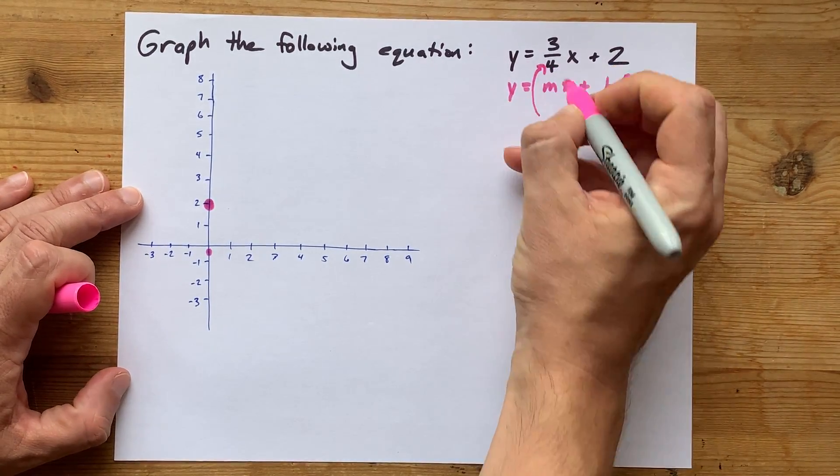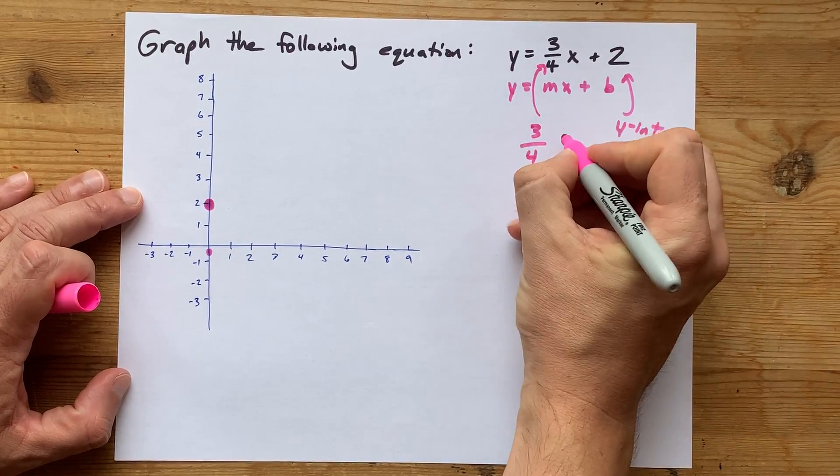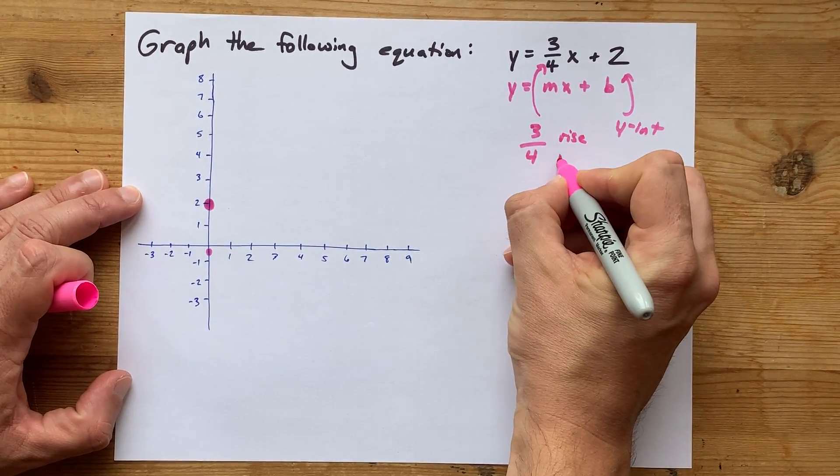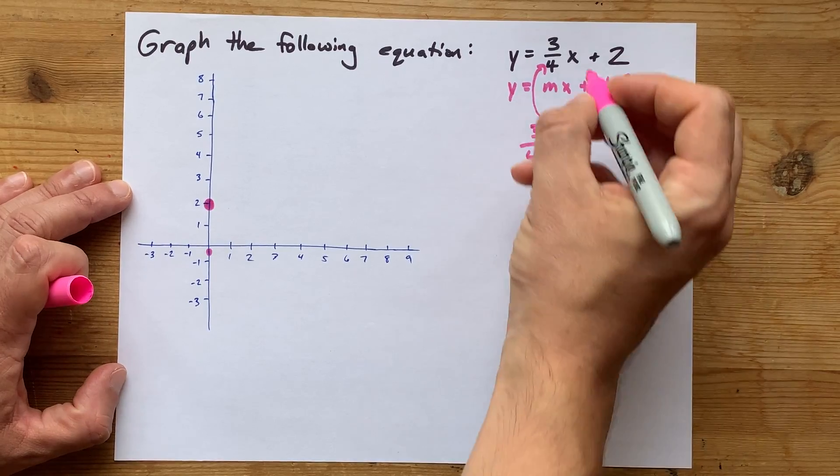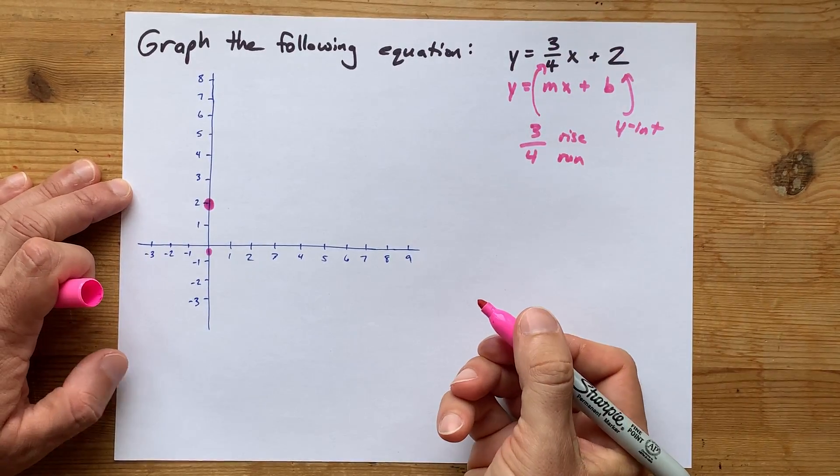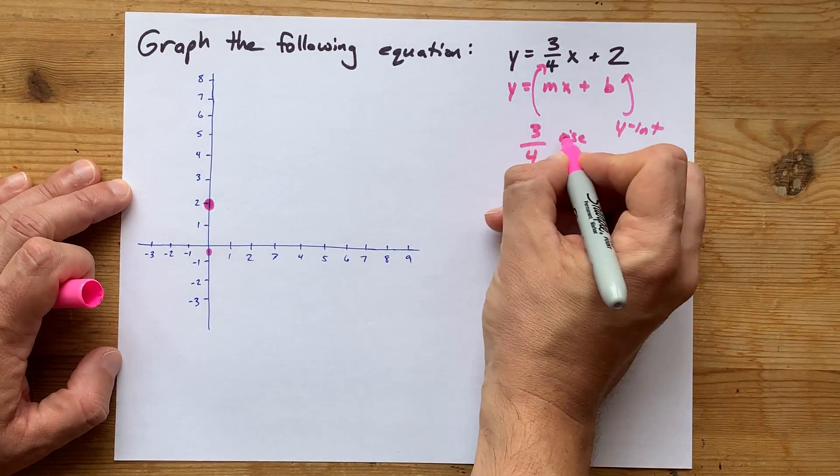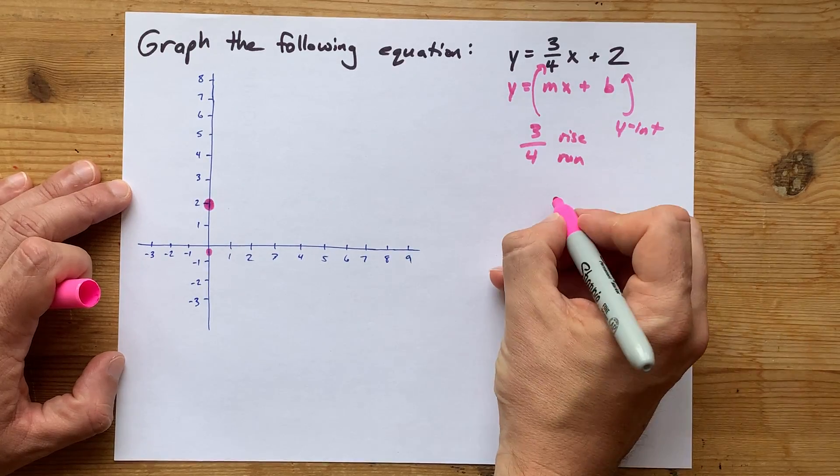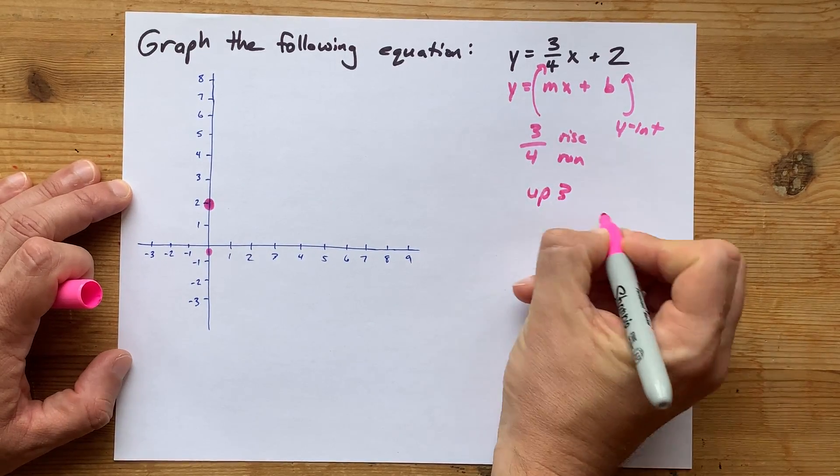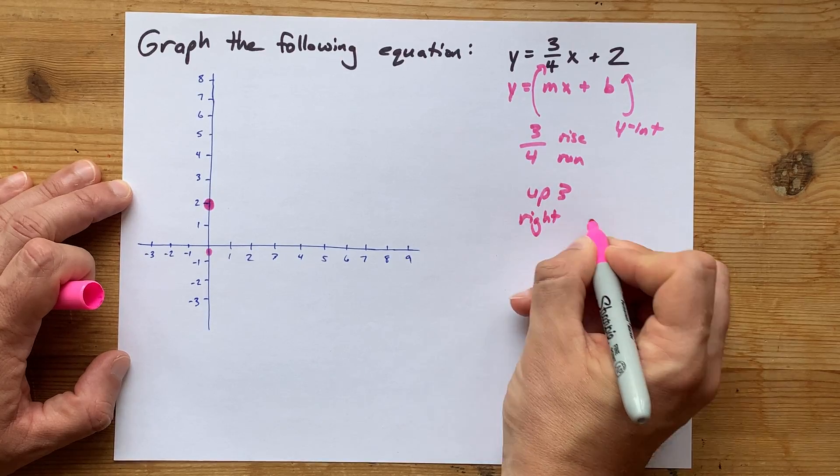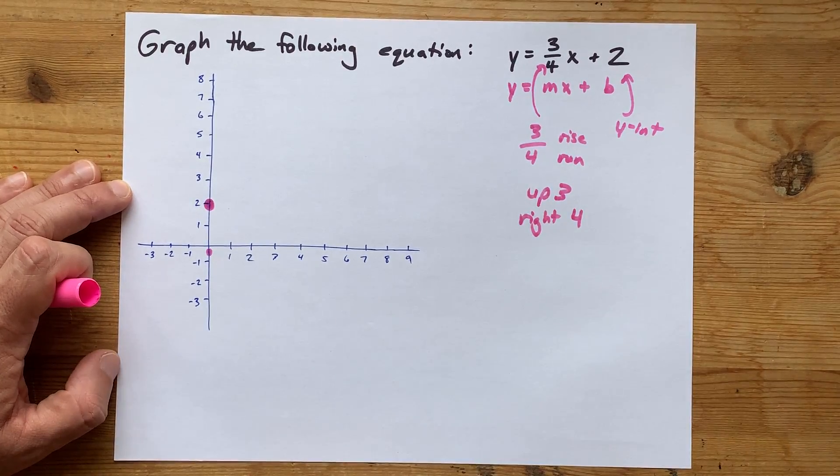Then my slope, three-quarters, tells me my rise and my run. Now it's positive 3 and positive 4, which means that it's a rise of actually 3. We're going to go up 3. And the run of 4 positively means we're going to go to the right by 4.